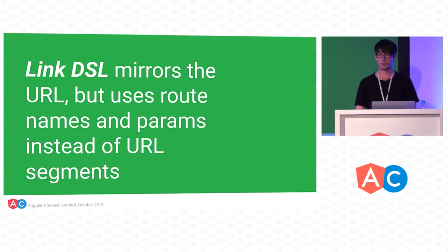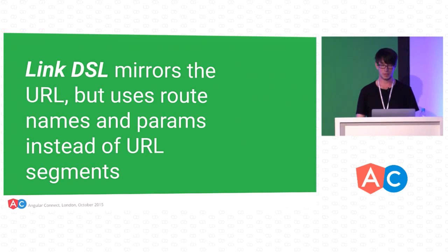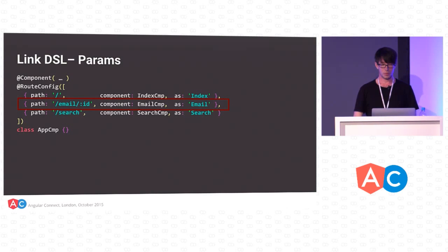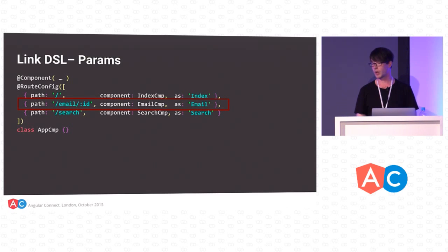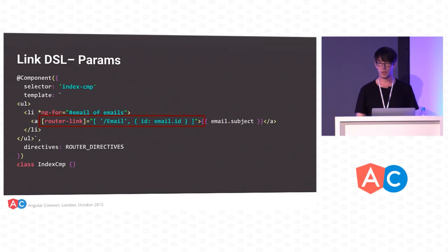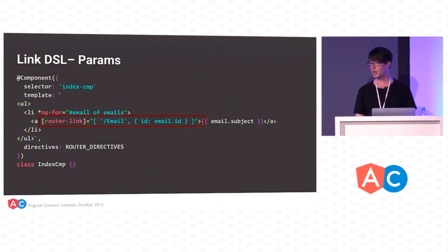This link DSL mirrors URLs but uses route names and route params instead of URL fragments. In our route config we had an EmailComponent that took an ID parameter. To link to EmailComponent for a given email with a given ID, we can look at our index component — we actually need to generate links to all of those emails. We can use ng-for, iterate through emails, and set up a router link where we have 'Email' and then a map of parameters from ID to email.ID. So you can use bindings inside the right-hand side of the router-link directive.